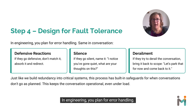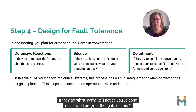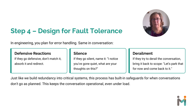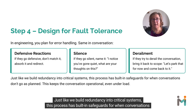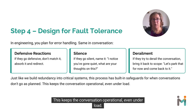In engineering, you plan for error handling — same in conversation. If they go defensive, don't match it; absorb it and redirect. If they go silent, name it: "I notice you've gone quiet. What are your thoughts on this?" If they try to derail the conversation, bring it back to scope: "Let's park that for now and come back to it." Just like we build redundancy into critical systems, this process has built-in safeguards for when conversations don't go as planned. This keeps the conversation operational, even under load.